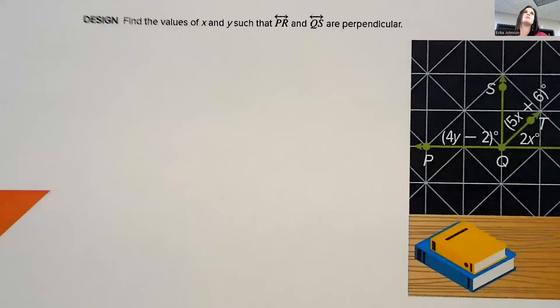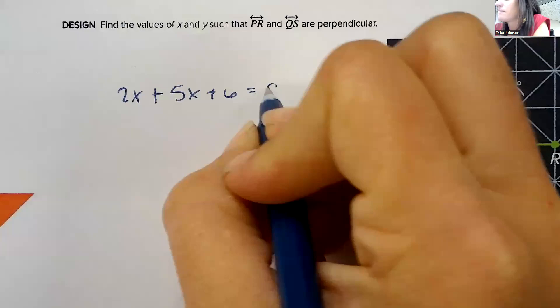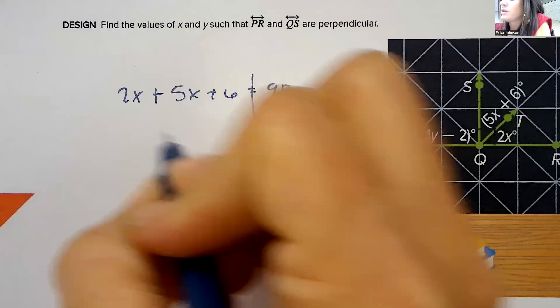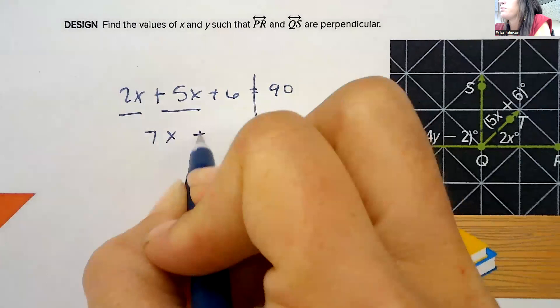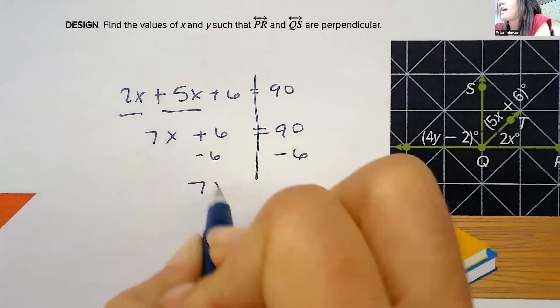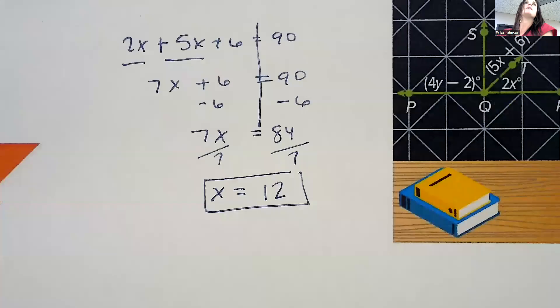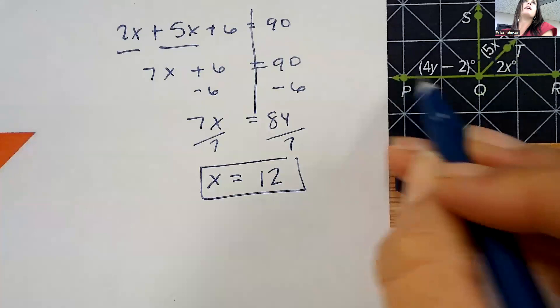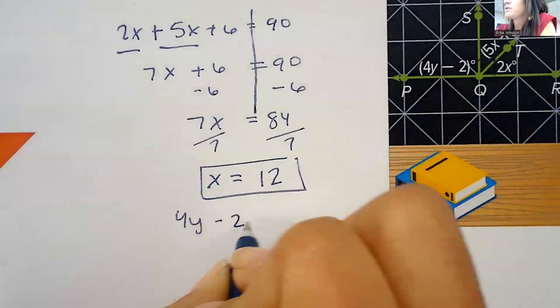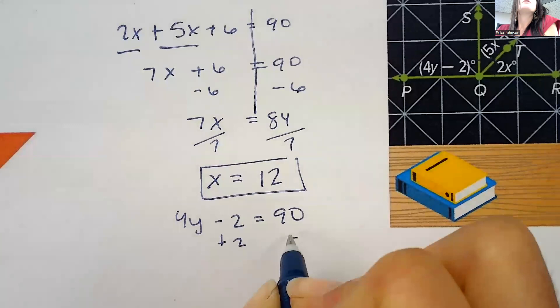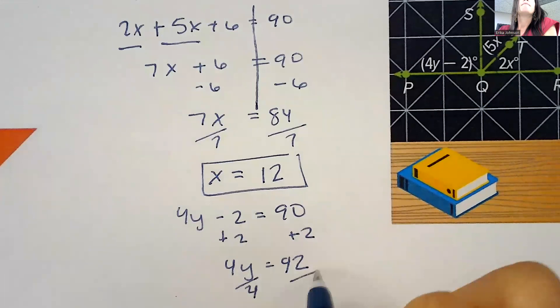The next question says to find the values of X and Y such that PR and QS are perpendicular. Same idea for finding X — we've got those two angles there both adding up to 90. So 5X plus 6 plus 2X is going to equal 90. That's 7X plus 6 equals 90. Subtract 6: 7X equals 84. Divide by 7: X equals 12. And to find Y — Y is the whole angle PQS — you're going to do 4Y minus 2 equals 90. Add 2: 4Y equals 92. Divide by 4: Y equals 23.